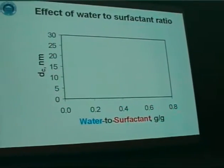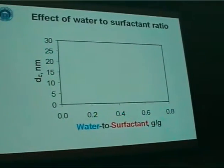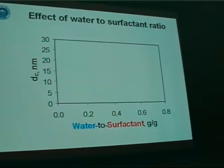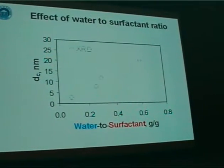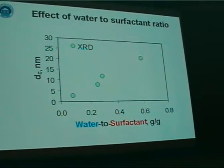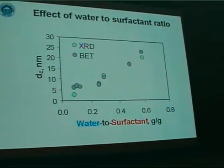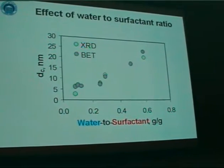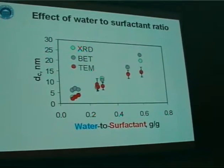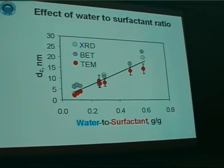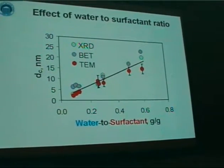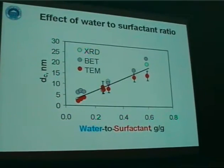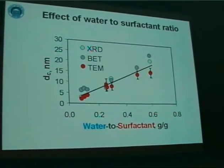To sum up the work on non-supported material: I'm showing the average crystallite sizes as a function of the water-to-surfactant weight ratio. This is the XRD work, we also did BET characterization of the non-supported material, and this is the TEM work. Indeed we find a more or less linear increase of the crystallite sizes as we increase the water-to-surfactant ratio.